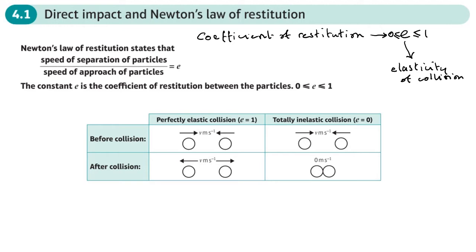The coefficient of restitution tells us about the elasticity of the collision — how much they bounce after the collision. If e equals one, we call it perfectly elastic. In other words, if they were going together at 10 metres per second, then when they separate the speed of separation would also be 10 metres per second.